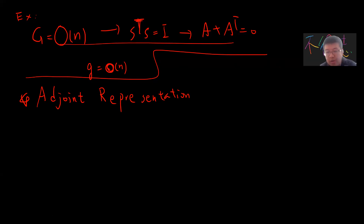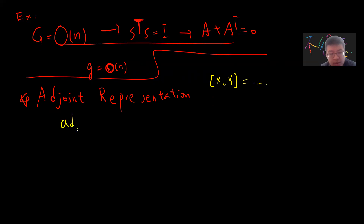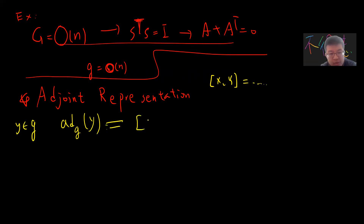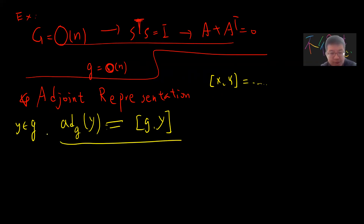The simplest definition comes directly from the bracket structure. For each element g in the algebra, you define the adjoint representation ad(g) acting on y to be [g, y]. This is the adjoint representation. One quick exercise is to prove that this adjoint representation is actually really a representation — specifically, you need to show that ad([x1, x2]) equals [ad(x1), ad(x2)].